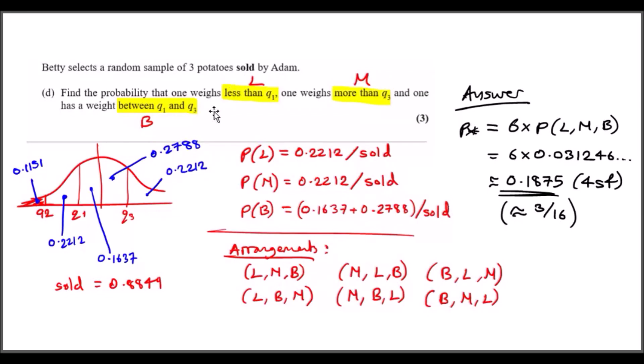One important thing to know is that because we're working in terms of sold, we should rescale the normal curve. For example, I gave each one a name: I said less than Q1 is L, more than Q3 is M, and between Q1 and Q3 is B. For the probability of L less than Q1 (between Q1 and 92, because we're only working in sold), I got 0.2212. Because the whole thing's out of 0.8849, I divided it by 0.8849, and this gives roughly a quarter. Same for more, I got the same value. And between, you've got 0.1637 plus 0.2788, and again scale it down divided by the sold region. So you have these three.